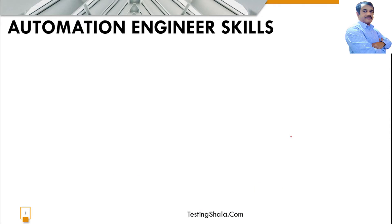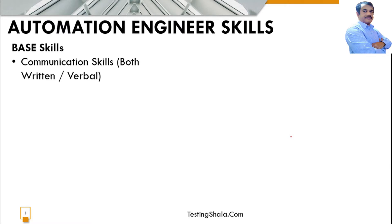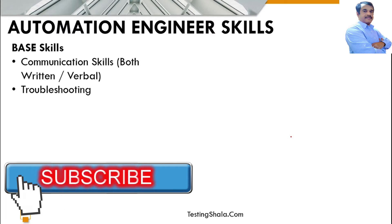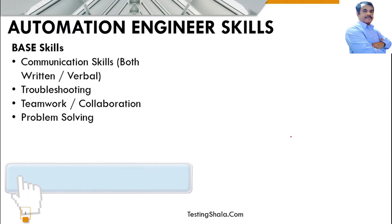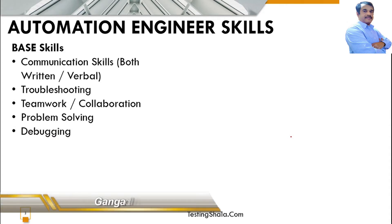The basic skills you should have as an automation engineer include good communication skills — both written and verbal — being a good troubleshooter, a good team player, good collaboration, strong problem-solving skills, and proficiency in debugging.